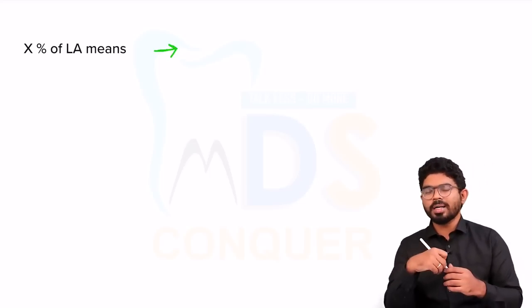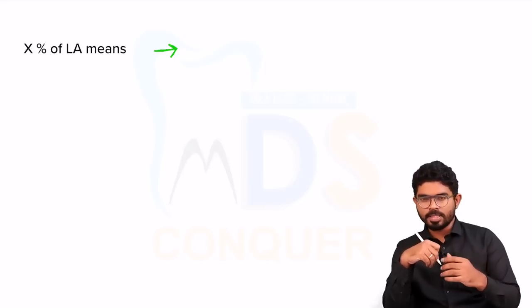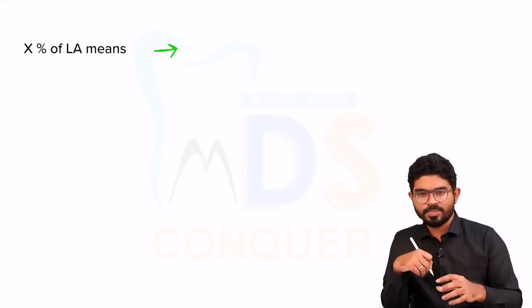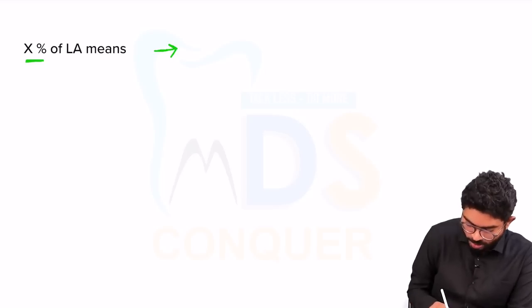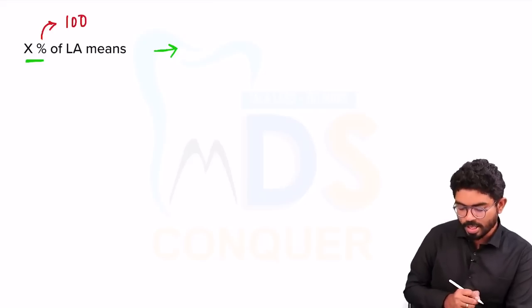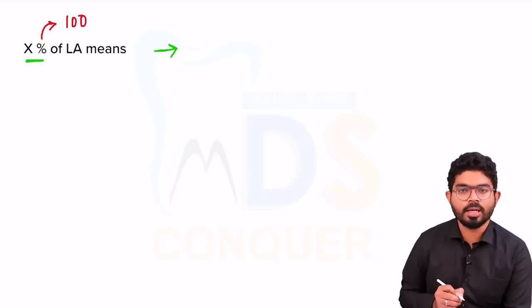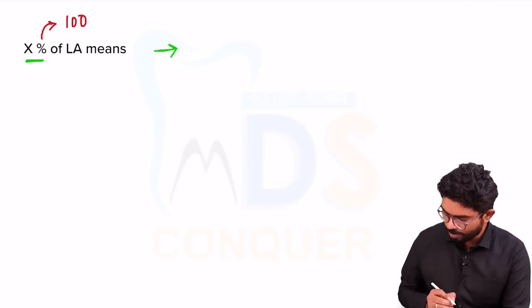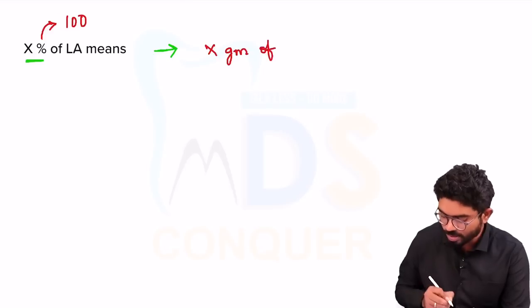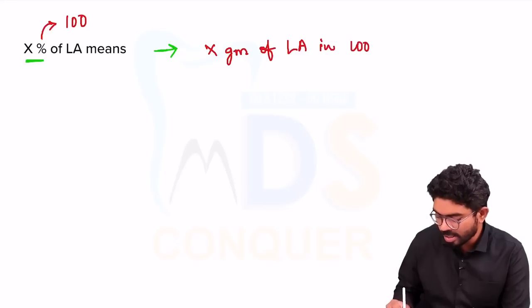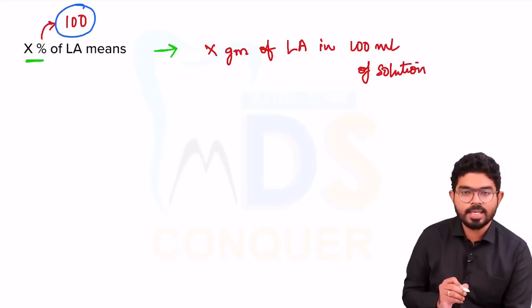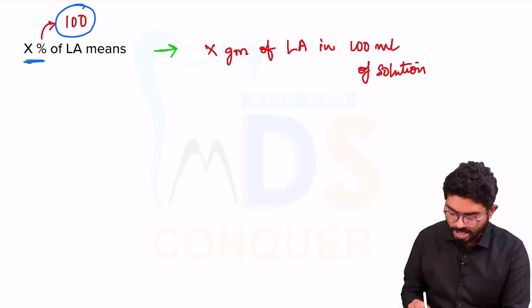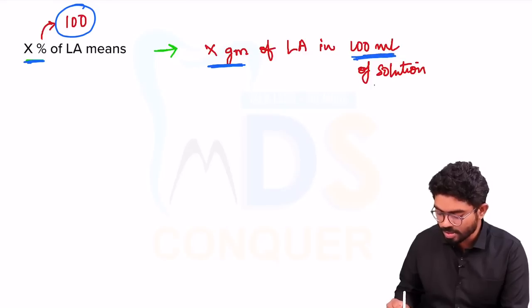The first thing is: what does X percentage of LA mean? We often hear terms like 2% lignocaine, 4% lidocaine, 0.5% bupivacaine — so what does the percentage mean? Percentages are always calculated for 100. X percentage of lidocaine or bupivacaine simply means it contains X grams of LA in 100 ml of solution.